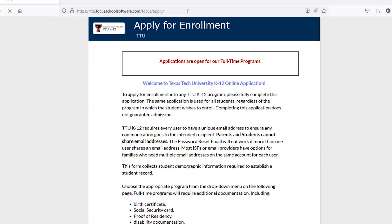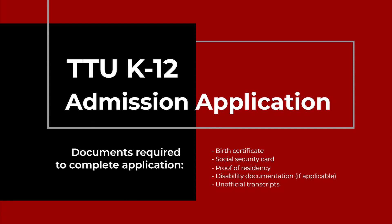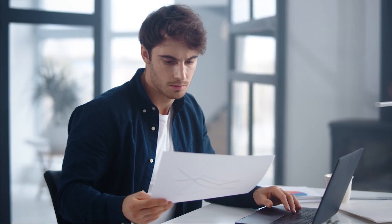If you are applying for a full-time program, we will require some additional documentation including your student's birth certificate, social security card, proof of residency, any disability documentation if applicable, and the student's most recent transcript or report card. Please have scanned images of these documents ready before you begin your application.